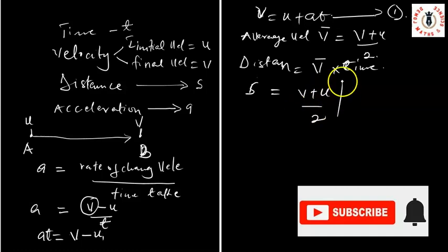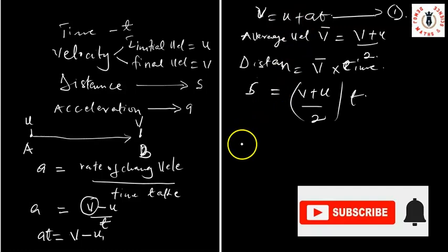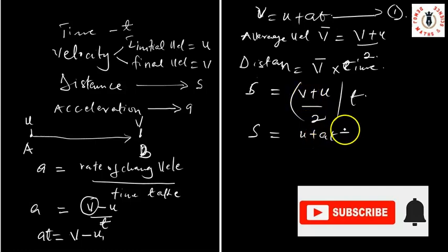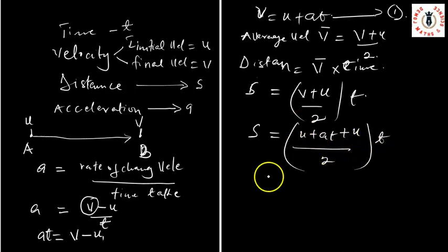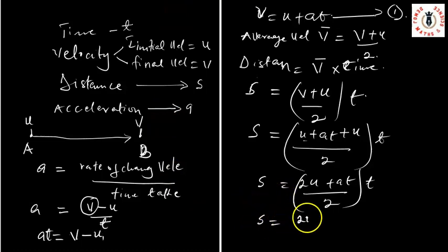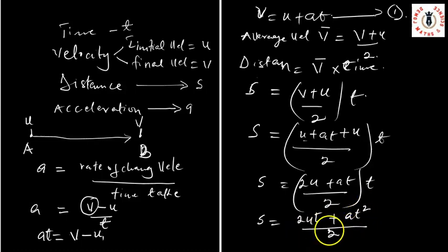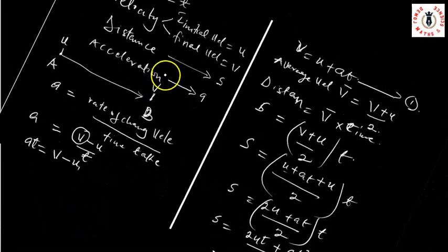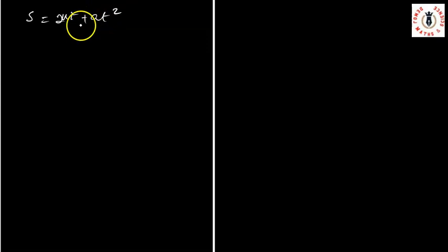So if my distance covered is given as average velocity times T, then I can conclude that S = (V + U) / 2 × T. Now, if S = (V + U) / 2, and remembering from equation 1 that V = U + AT, we can substitute for V, so that S = (U + AT + U) / 2 × T, which gives S = (2U + AT) / 2 × T.